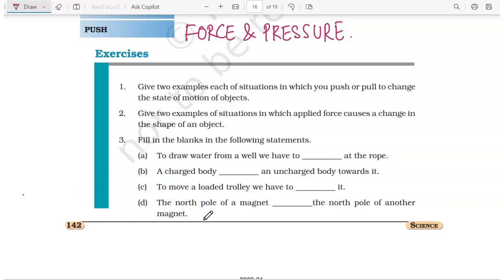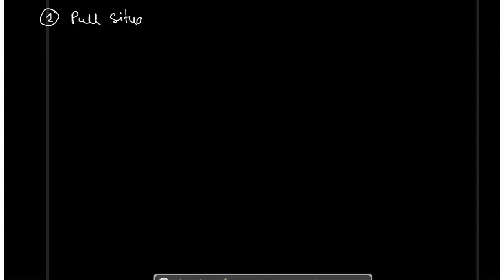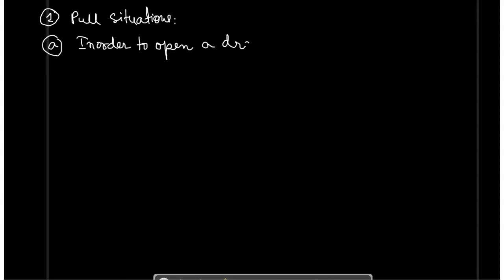We will be giving two pull situations and two push situations. Under pull situations, the first example: in order to open a drawer, we have to pull it. When we pull the drawer, the action changes the state of motion of the drawer.